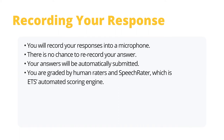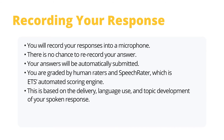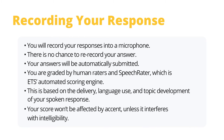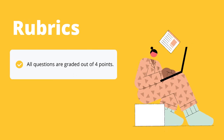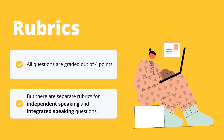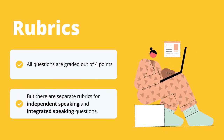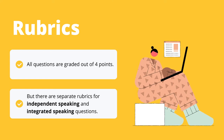You are graded by Human Raters and Speech Rater, which is ETS's automated scoring engine, based on the delivery, language use and topic development of your spoken response. Don't worry too much about perfecting your accent because the content is more important. Your score won't be affected by accent unless it interferes with your response's intelligibility. All questions are graded out of four points, but there are separate rubrics for independent speaking and integrated speaking questions.